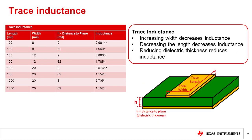This slide shows the trace inductance versus width, length, and dielectric thickness. Doubling the width cuts the inductance in half. Likewise, reducing the length will also proportionately reduce the inductance. Reducing the dielectric thickness will also reduce inductance, but not substantially. The lengths and widths given in the table are typical for what is connected to decoupling capacitors. The typical ESL of a decoupling capacitor is on the order of 200 nanohenries, so the trace inductance can easily be a dominant factor.